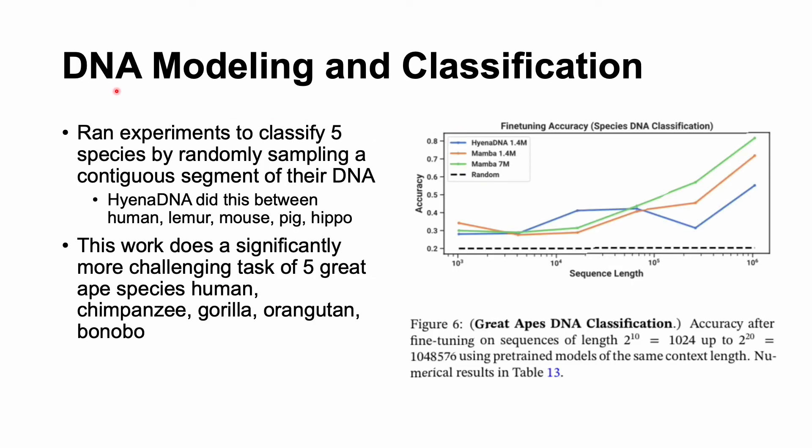They also evaluated Mamba on DNA modeling classification. So you can kind of think of this task as given a DNA sequence, can you classify it to any certain species? So they ran experiments to classify five species, randomly sampling any contiguous segment of their DNA. Hyena DNA also did this in their own evaluations between human, lemur, mouse, pig, and hippo. And they did really well. But when we compare it to Mamba, Mamba actually also blows it out the water. But they also did a more challenging task. They tried to classify five great ape species, which is arguably a little bit more difficult. So it's human, chimpanzee, gorilla, orangutan, and bonobo. Even up to a sequence length of 10 to the 6, still performed really, really well.